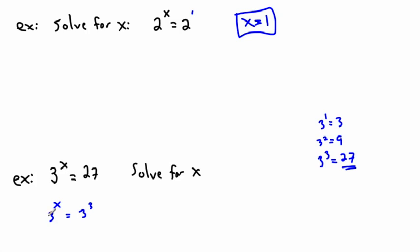So then we can say, all right, well, now I have the same base. Look, 3, 3. So if it's 3 to the x equals 3 to the 3, because I have the same base, x equals 3. And I'm done.